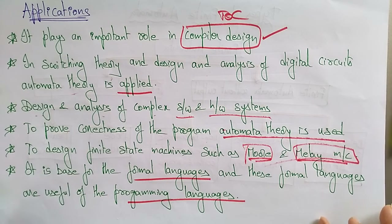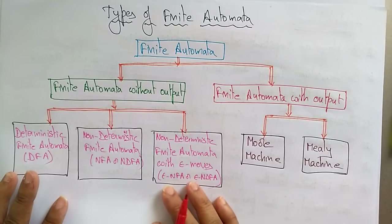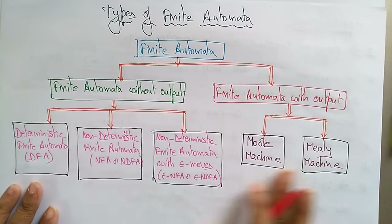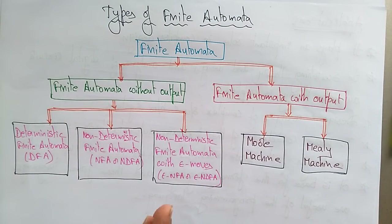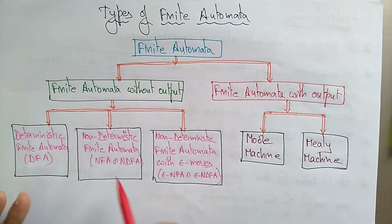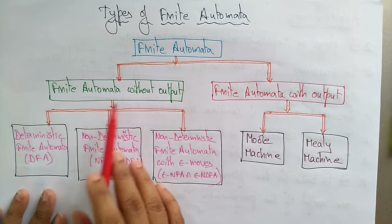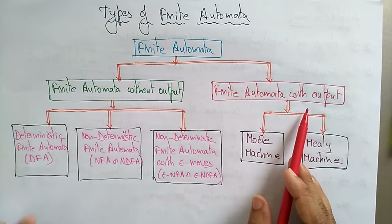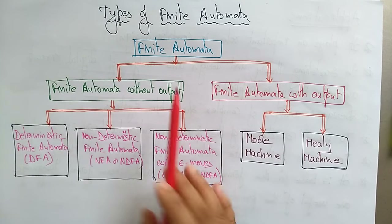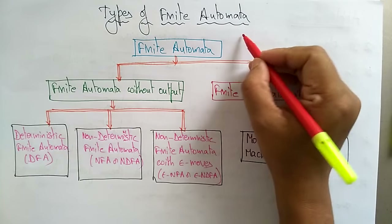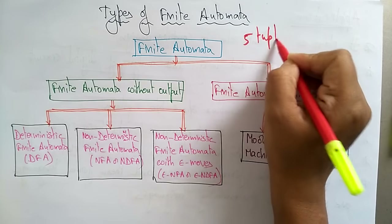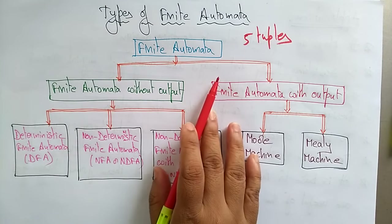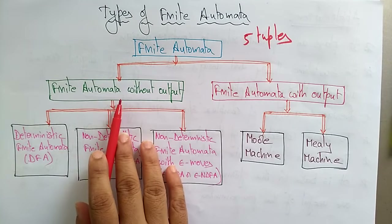Now let me explain the different types of finite automata. In this unit we are going to learn about these different finite automata. A finite automaton is a five-tuple and is of two types: one is without output and another is with output.